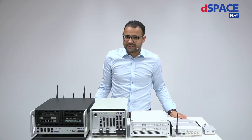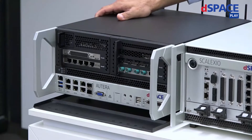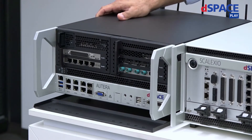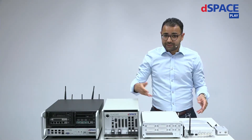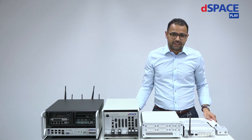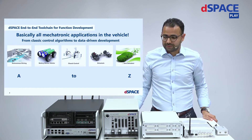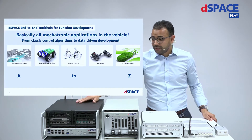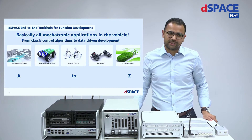And just one more last thing: Autera. Autera comes from 'autonomous era.' It is a high-end, brand-new prototyping system for data-driven development. All these different systems cover different use cases — all mechatronics applications, for example in the vehicle and in the lab — from autonomous driving for data-driven development to zero emission.